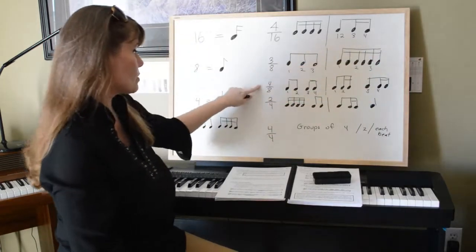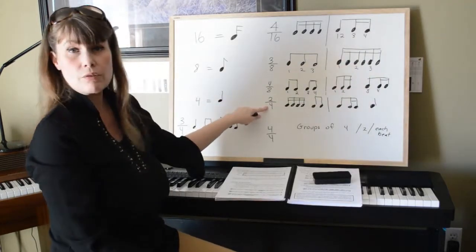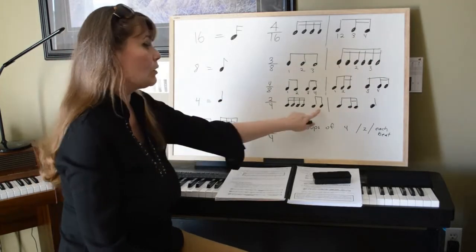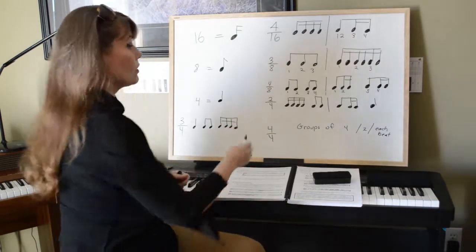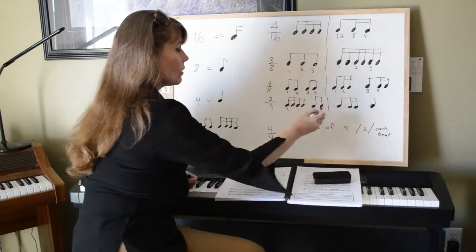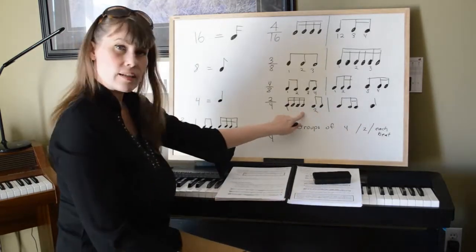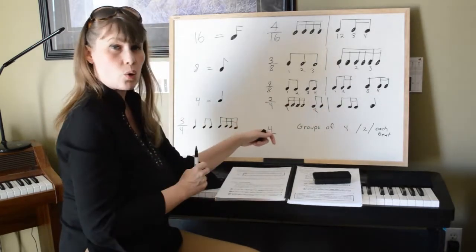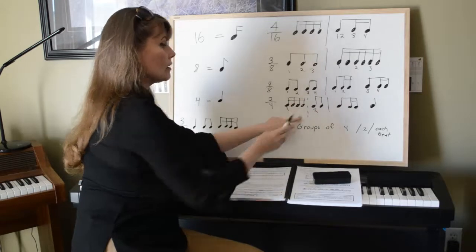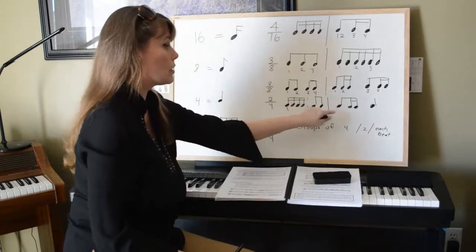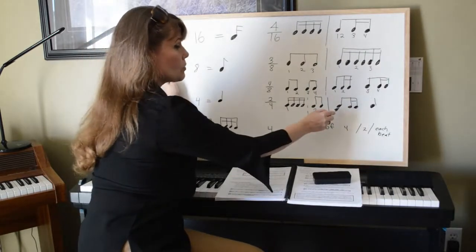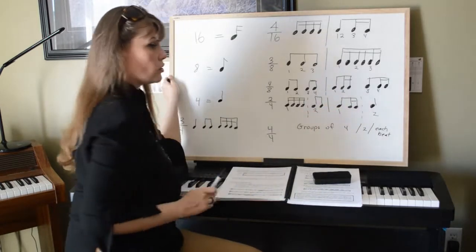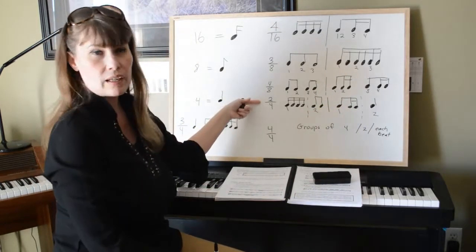Now in 2/4 time, we're looking for the quarter note to have the main beat. Again we're going to see that bar divided in half — two sections. Beat one is here and beat two is there. Four sixteenth notes equal one quarter, and then two eighth notes equal the second quarter we're looking for. We see that bar divided into two groups. There's beat one and beat two — we've divided the measure into two sections, and that is the correct way to group measures that have a quarter note having the main beat in 2/4 time.